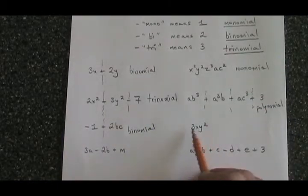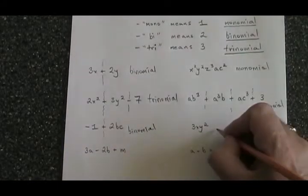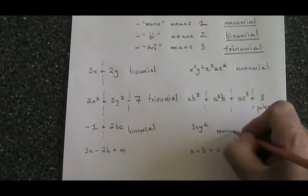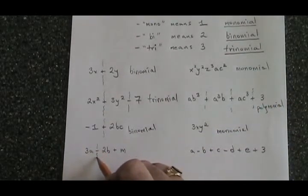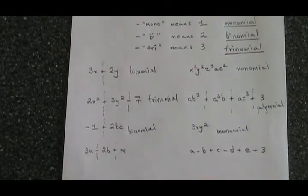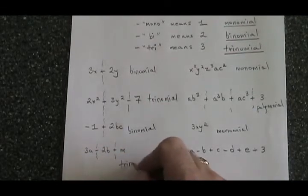Here, we have a single term. There are no plus or minus signs, so this is a monomial. Here, I can make two walls at the minus sign and at the plus sign. This is a trinomial. It has three terms.